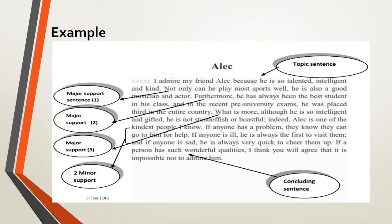This is an example of an English paragraph. First, we consider its format. We notice that on the first line, there is a space. This is the indentation.